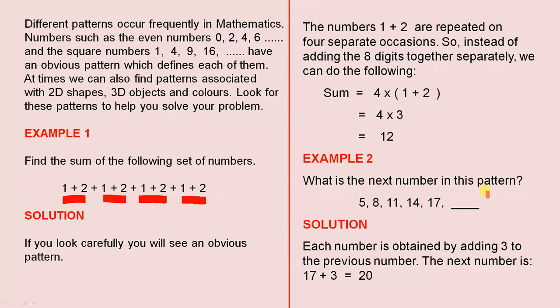What is the next number in this pattern? Each number is obtained by adding 3 to the previous number. So 5 plus 3 is 8, 8 plus 3 is 11, 11 plus 3 is 14, 14 plus 3 is 17, 17 plus 3 is 20. So the next number is 17, 17 plus 3 is 20.